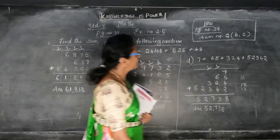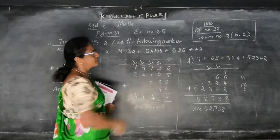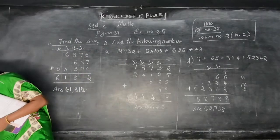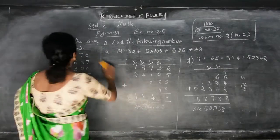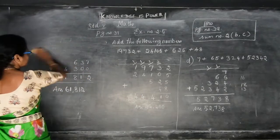Okay children. So A sum and D sum I have done. B and C is the homework for you — do it at home for practice. Now we will move on to the next sum.